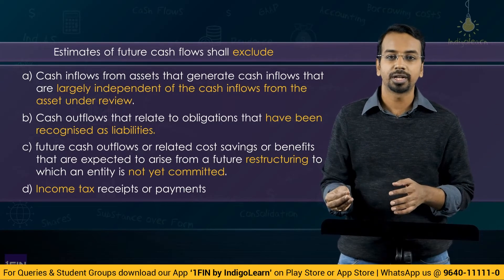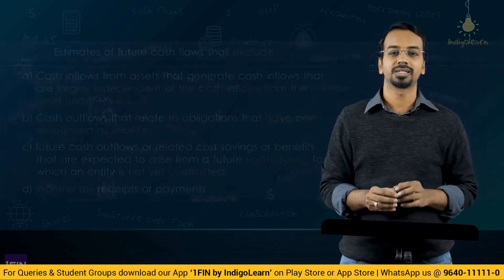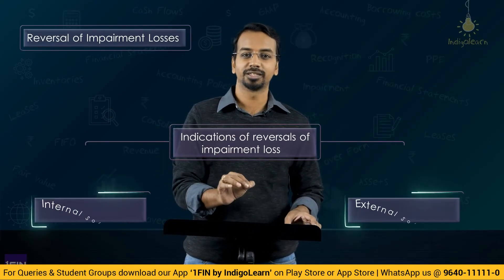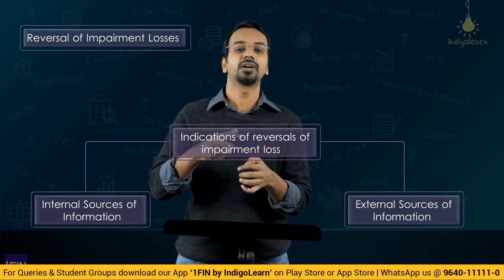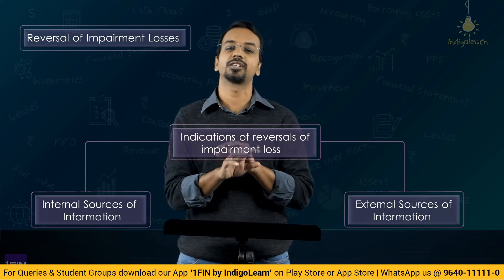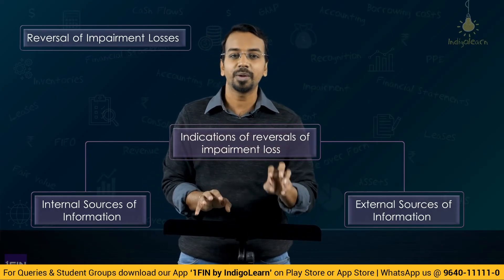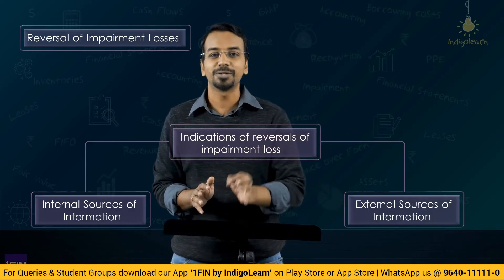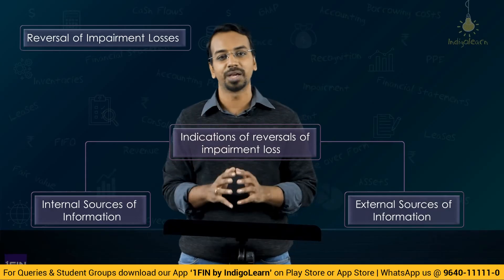All of these cash flows will be discounted using the discount rate to arrive at the present value, which is the value in use. Reversal of impairment loss is permitted only if there are indicators of reversals. You cannot simply recompute the value in use using the same cash flows and same discount rate and say the recoverable amount is greater than the carrying amount — that is not permitted. You have to see if there are indicators, and based on those indicators, see if the estimates of value in use or fair value less cost of disposal have changed. Once this change has been established, only then can you reverse the impairment loss.